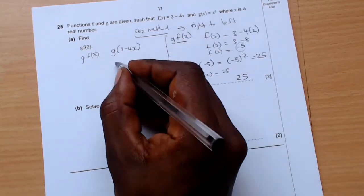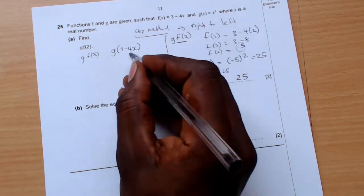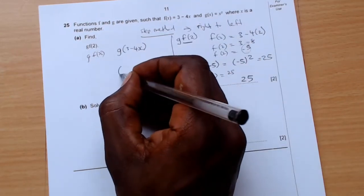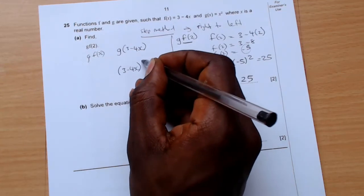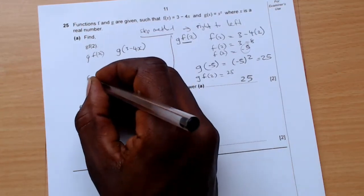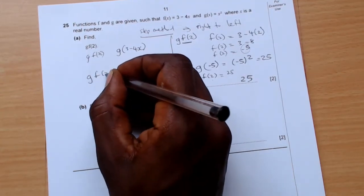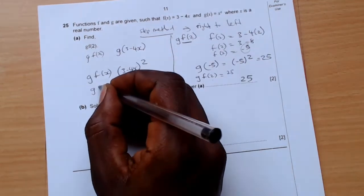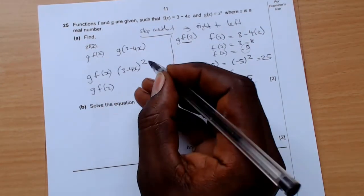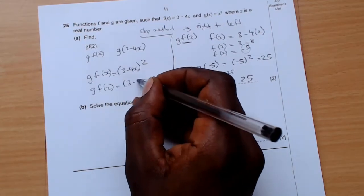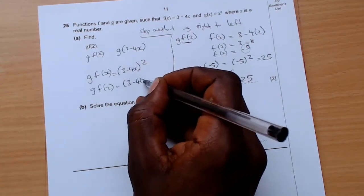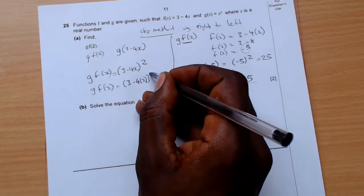Okay, so now where there is g, your g is x squared, so you come and put 3 minus 4x and then square. That is your g(f(x)). Now if you want g(f(2)), you come and put 2 in here, so 3 minus 4 times 2 squared.